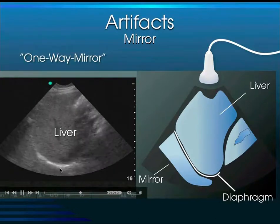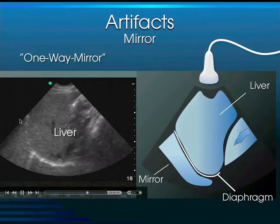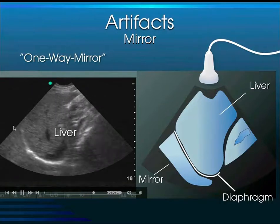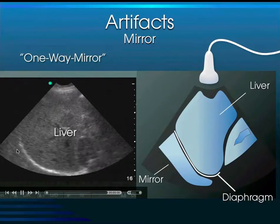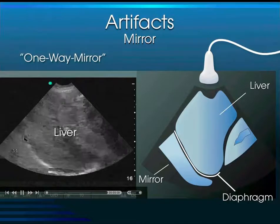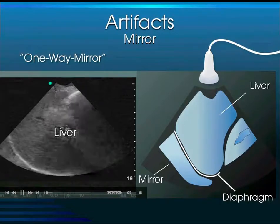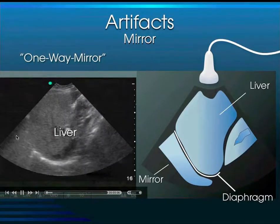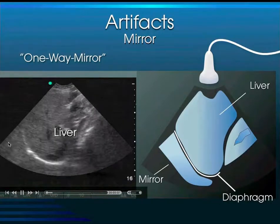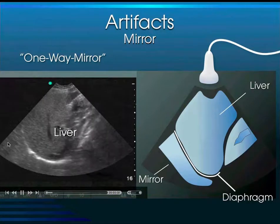The mirror image artifact is expected in all normal individuals. We can see the liver, the diaphragm, and superior to the diaphragm the mirrored image appears. Remember this is a coronal plane, so structures to one side are more towards the head — more superior.